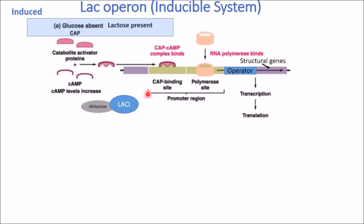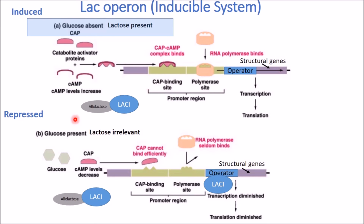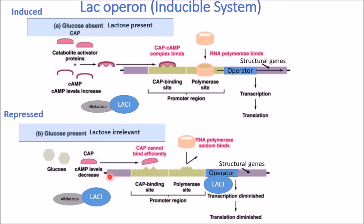When the lac operon is repressed, glucose is present. Lactose can be high or low — if glucose is present, the system is repressed. Essentially, whether or not the repressor is bound to the operator doesn't matter, because you're not going to get high-level expression. The CAP-cyclic AMP complex is not present, it can't bind to the CAP binding site, it cannot activate this locus, and you don't get high-level expression.